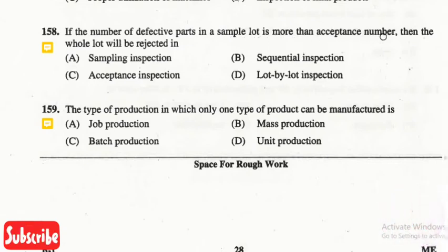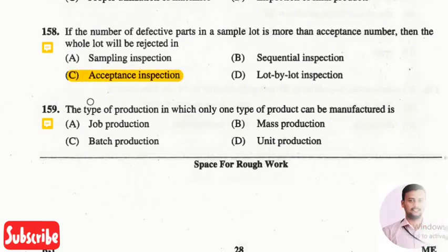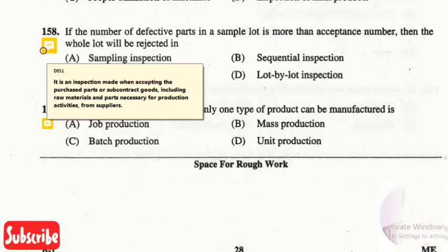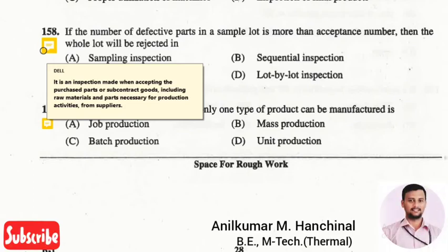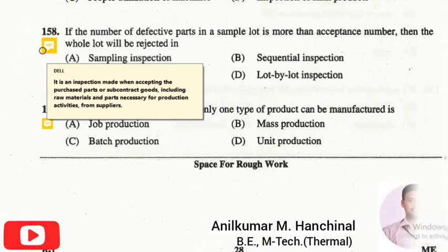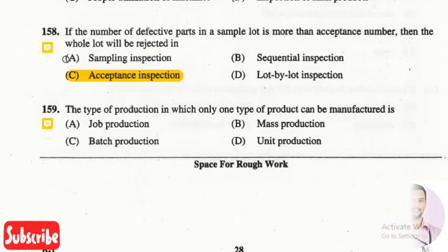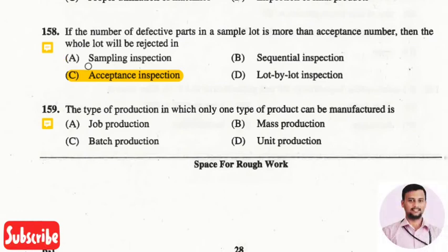The next question is: if the number of defective parts in a sample lot is more than the acceptance number, the whole lot will be rejected in? The right answer is option three, that is acceptance inspection. Acceptance inspection is an inspection made when accepting purchased parts or subcontract goods — including raw materials and parts for production — from the supplier. If defects are found, the whole lot is rejected.